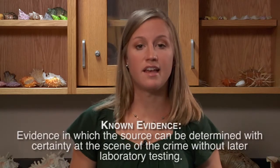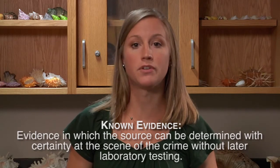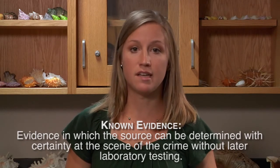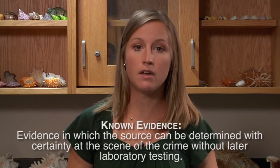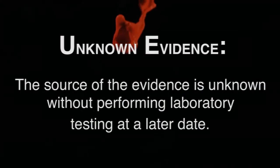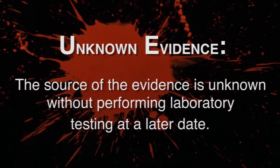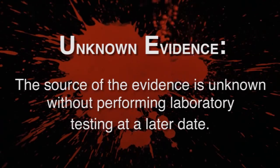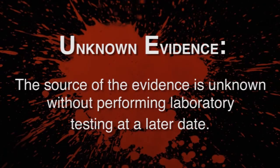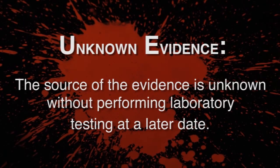Another category of evidence is known vs. unknown. Known evidence is evidence in which the source can be determined with certainty at the scene of the crime without later laboratory testing — for example, a blood sample taken from a victim at the scene. Unknown evidence is when you do not know the source without performing laboratory testing at a later date. An example would be blood spatter at the crime scene — you only know whose blood it is after DNA testing back at the lab.